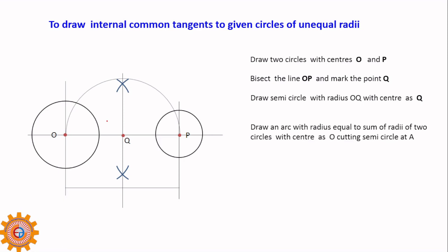Draw an arc with radius equal to the sum of the radii of the two circles, R1 plus R2. This arc cuts the semicircle. The arc radius is R1 plus R2, and that will cut the semicircle at a point. Then draw an arc of radius R1 plus R2, which will cut the bigger circle at point A.